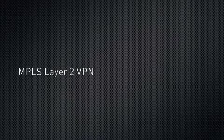MPLS Layer 2 VPN, which is the most common type of L2 VPNs, emulates a Layer 2 switch on the MPLS edge routers. Or, in its simplest form, it emulates a point-to-point Ethernet connection.